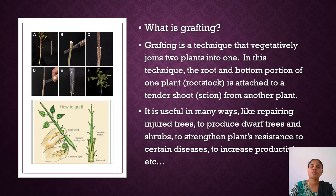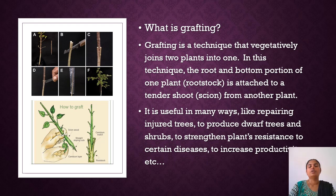The next question is: what is grafting? Grafting is vegetatively joining one plant with another. The stem and root part, called the root stalk, is joined with the tender shoot of another plant, called the scion. The reasons for grafting include improving productivity, making plants disease resistant, growing dwarf trees, and many other purposes. The figure in the slide clearly explains how grafting is done.